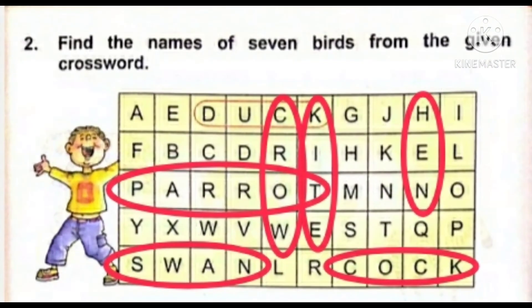Now let us start the next page. Question number two is: find the names of seven birds from the given crossword. Yahaan pe dekhiye, crossword puzzle diya hua hai. Aur ek bird ka naam aapko pahle se hi diya hua hai — duck. Duck mein pahle se hi circle laga hai. Aapko six birds ka naam aur dhundhna hai.